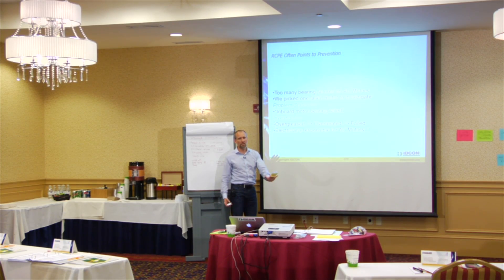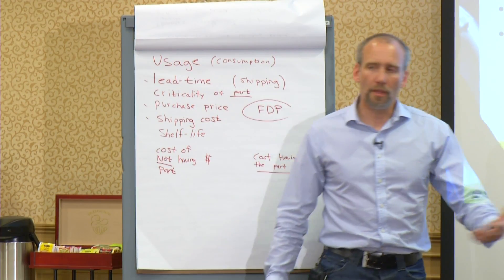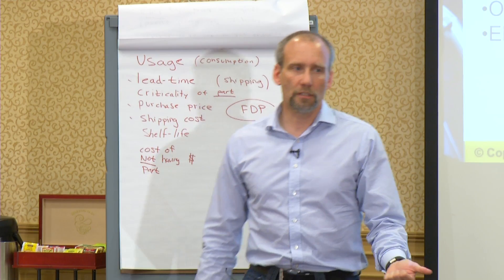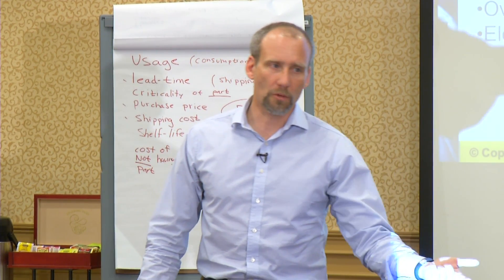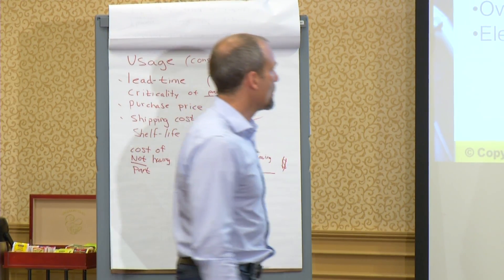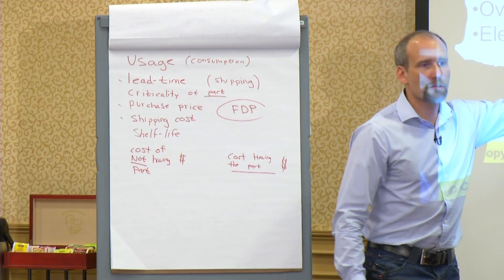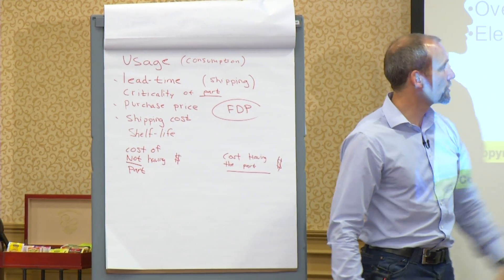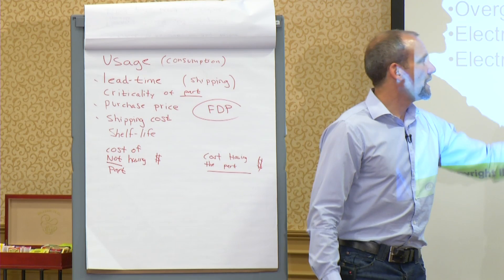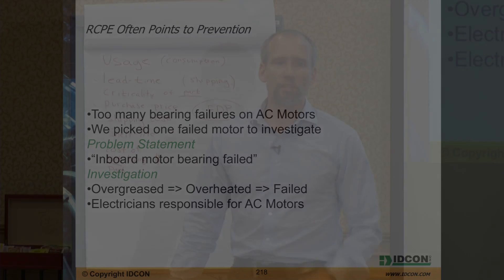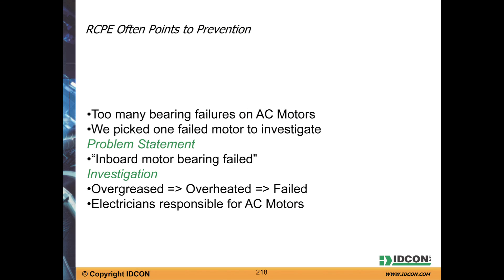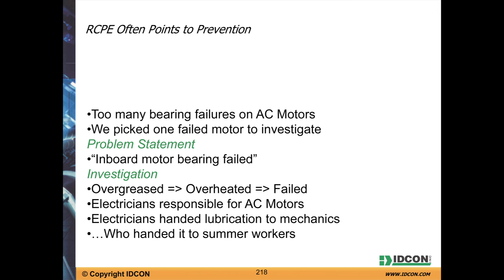So now we get more into the people side. Almost every problem you work with has a technical cause but also a kind of human cause and maybe an underlying process cause. Electricians were responsible for AC motors and lubrication, but they handed lubrication over to mechanics because they didn't want to do it. Electricians can be a little prima donna about not wanting to touch the equipment. So the mechanics were kind of offended and said they'd hand it to the summer workers.